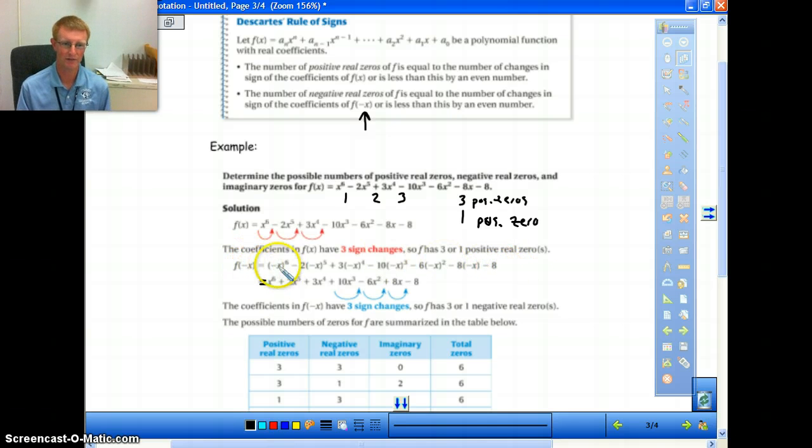So what you'll do is you'll take that negative x and put it throughout your entire thing, and you'll do the same thing. Look at the sign changes. Positive, positive, positive, positive, no change. And then it goes from positive to negative. So that's 1. Then it goes from negative to positive. That's 2. Then it goes from positive to negative. That's 3. So therefore, we would have 3 negative zeros, or we could have 1 negative zero.